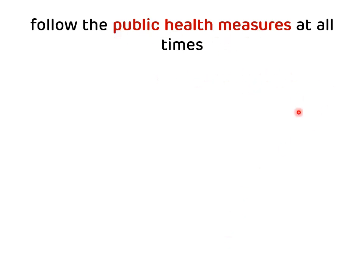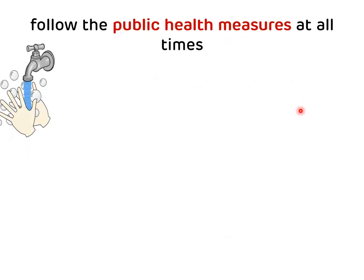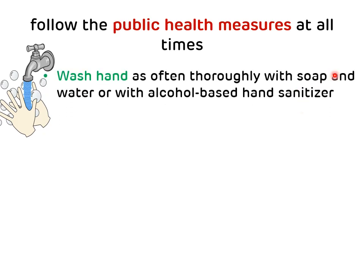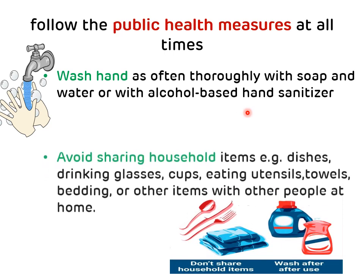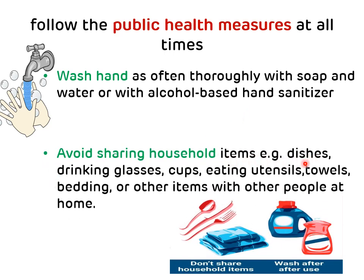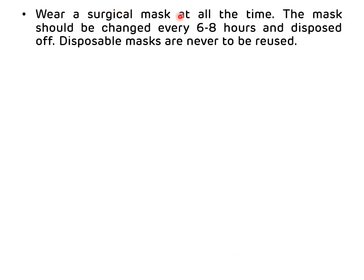What are these public health measures? First, frequently wash your hands with soap and water or with an alcohol-based hand sanitizer. Avoid sharing household items such as dishes, drinking glasses, utensils, towels, beddings, or other items with other people at home. Wear a surgical mask at all times; this mask should be changed every six to eight hours and disposed of. Disposed masks should never be reused.